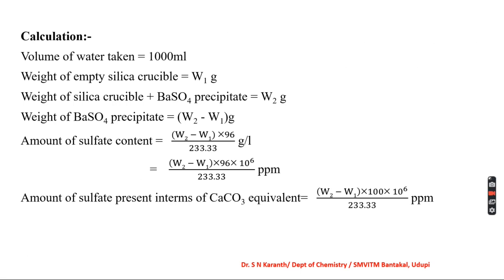For the calculation: 1000 ml of water was taken. W1 is the weight of the empty silica crucible, and W2 is the weight of the silica crucible with barium sulphate after precipitation. The net weight of barium sulphate is W2 minus W1. Using the formula, the amount of sulphate content equals (W2 − W1) × 96 ÷ 233, where 96 is the molecular weight of sulphate and 233 is the molecular weight of barium sulphate.